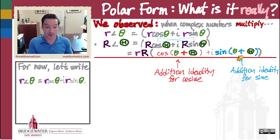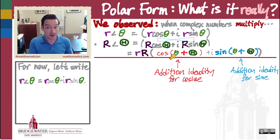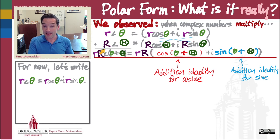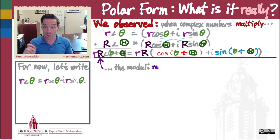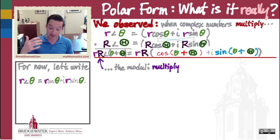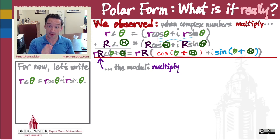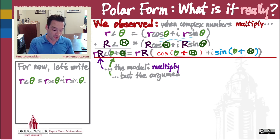So what we find is that the product of two complex numbers can be rewritten with a new modulus — the product of the old moduli, r times R — and a new argument that is the sum of the old arguments, not their product. So r∠θ times R∠Θ equals rR∠(θ + Θ). When complex numbers multiply, the moduli multiply and the arguments add. I just realized as I was making this video that this is an alliteration: moduli multiply, arguments add.